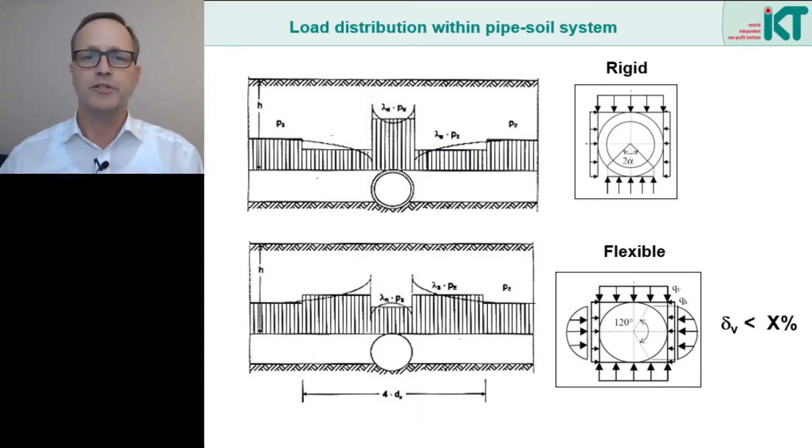It is important to know that this consideration is basically nothing to do with plastic as a material. Here it is only a matter of the relationship between the pipe stiffness and the soil stiffness. It is the deformability of the pipe compared to the soil that counts. In this sense, thin-walled steel pipes in stiff soils can also have a flexible behavior.